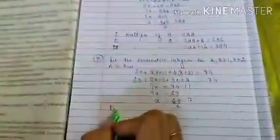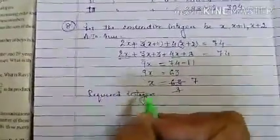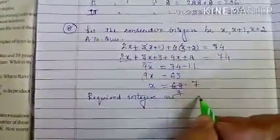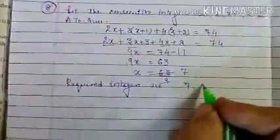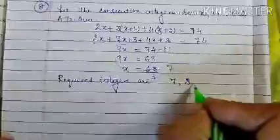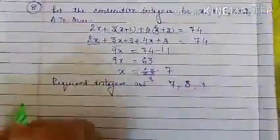So the first integer is 7. So the required integers are 7, then 7 plus 1, that is 8, and 7 plus 2, that is 9. Next question.